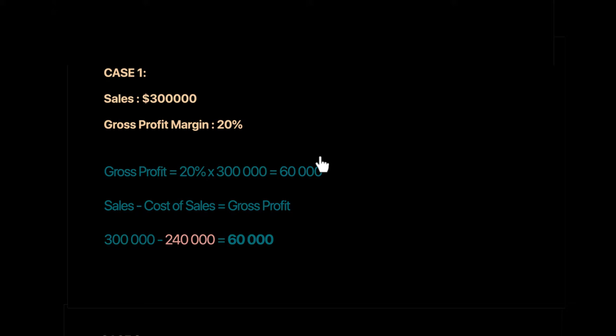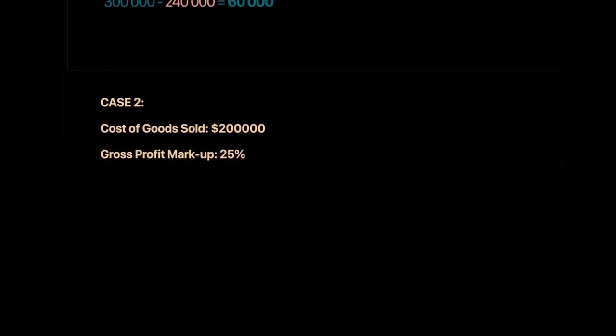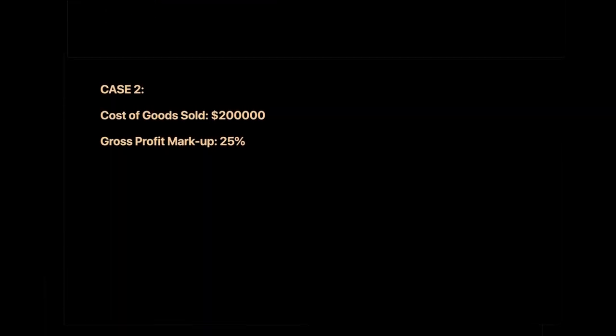Using the gross profit margin, we arrived at the gross profit, and from that we can find cost of sales. If anything is missing from cost of sales — whether inventory or purchases — we now know the cost of sales figure. Let's solve another case.